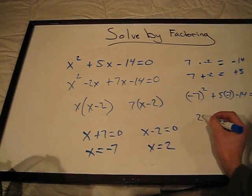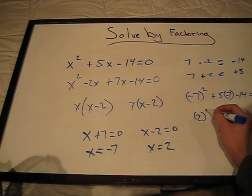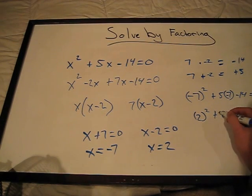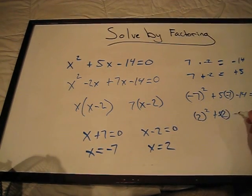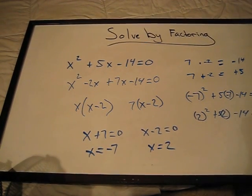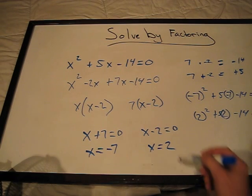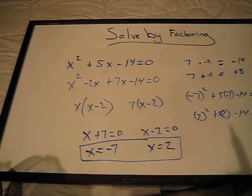And we'll take our other number. 2 squared plus 5 times 2 minus 14 equals 0. And that checks out. And that is how you solve by factoring.